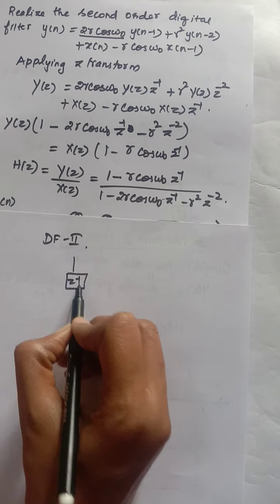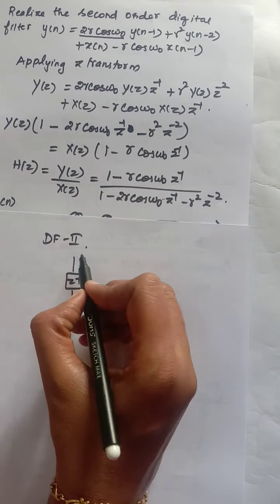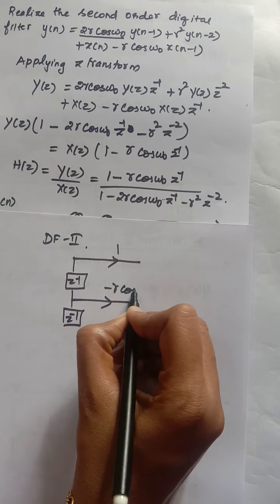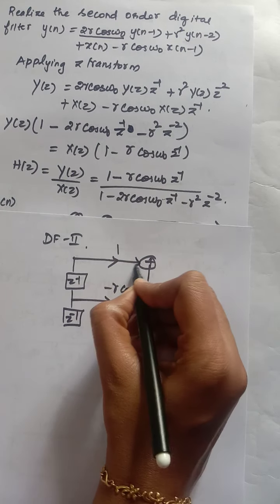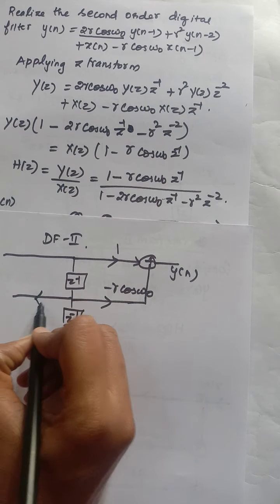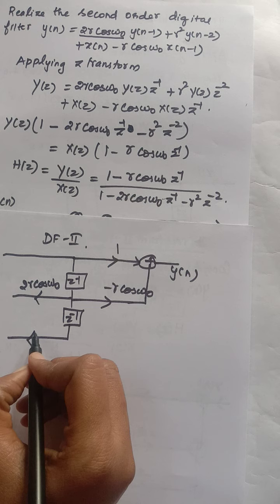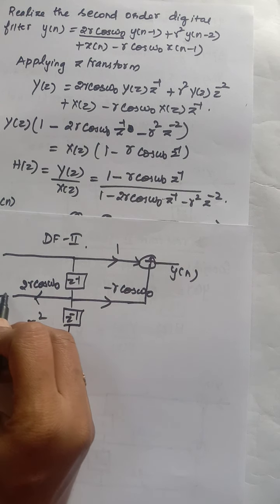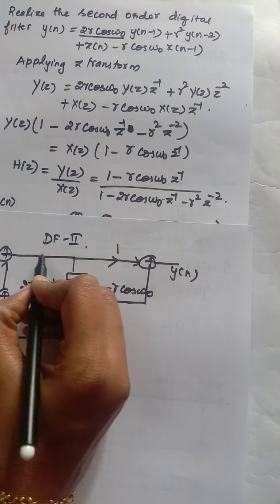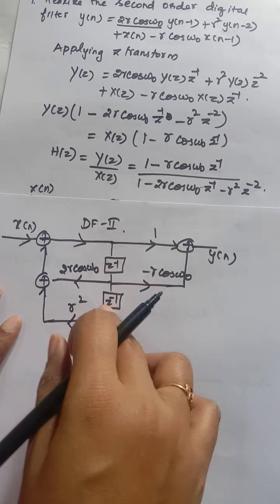For the first example in direct form two: numerator has one delay, denominator has two delays, so we draw two common delays. On the right side (numerator): coefficient 1 for no delay, then -r*cos(ω₀) after one delay - add these. On the left side (denominator): +2r*cos(ω₀) after one delay, +r² after two delays - add these. Input is x(n) and output is y(n). This reduces the number of delay elements compared to direct form one.